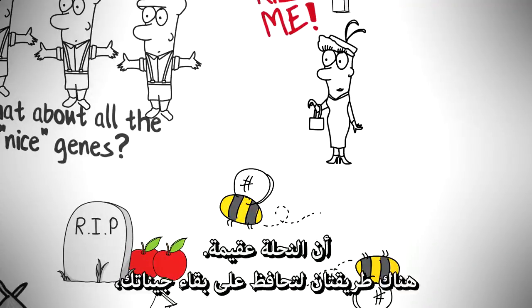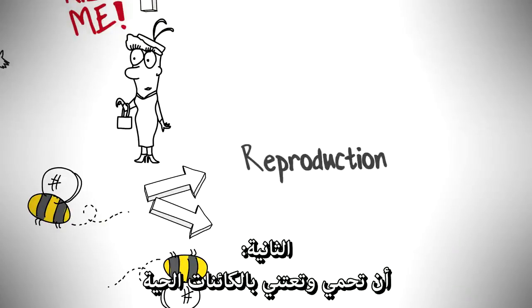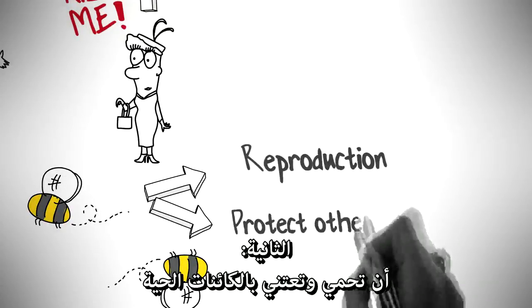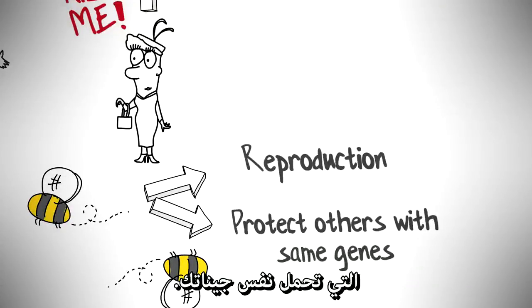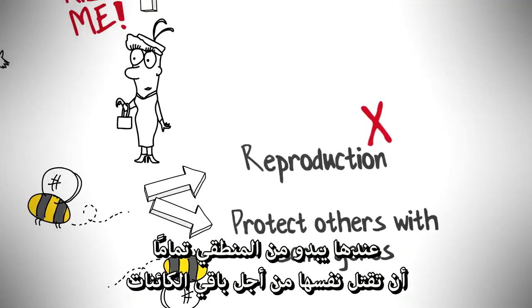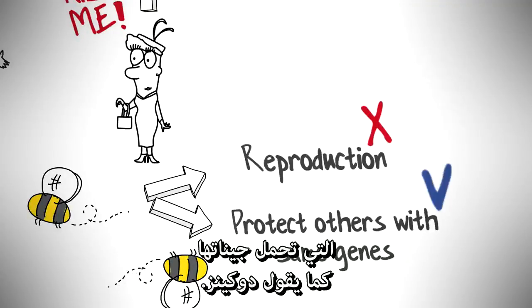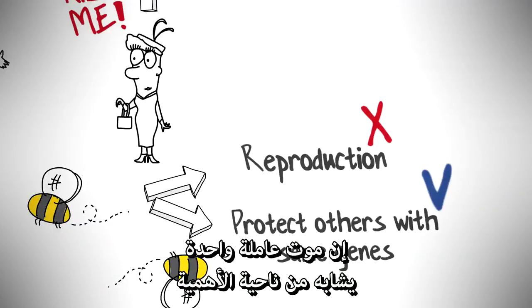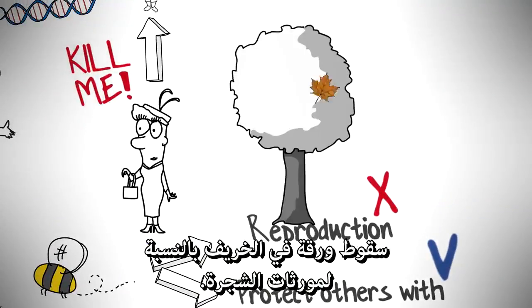What you have to keep in mind is that the bee is sterile. There are two ways to help your genes survive: one, to produce offspring; two, to take care of and protect the organisms with the same genes as you. Since the bee is sterile and cannot produce its own offspring, it now makes perfect sense to kill itself for the organisms which do carry its genes. Dawkins says, 'The death of a single sterile worker bee is no more serious to its genes than is the shedding of a leaf in autumn to the genes of a tree.'